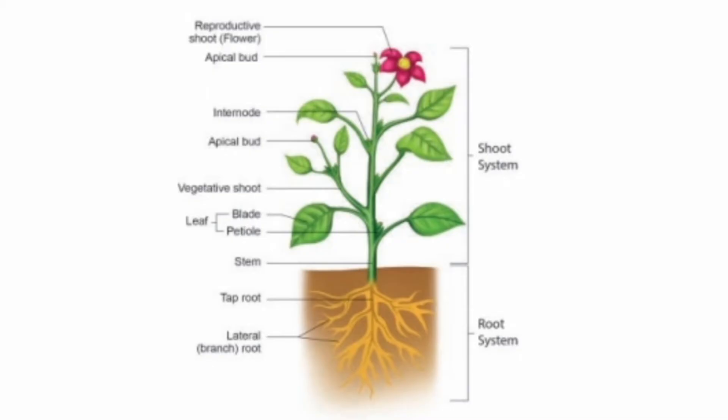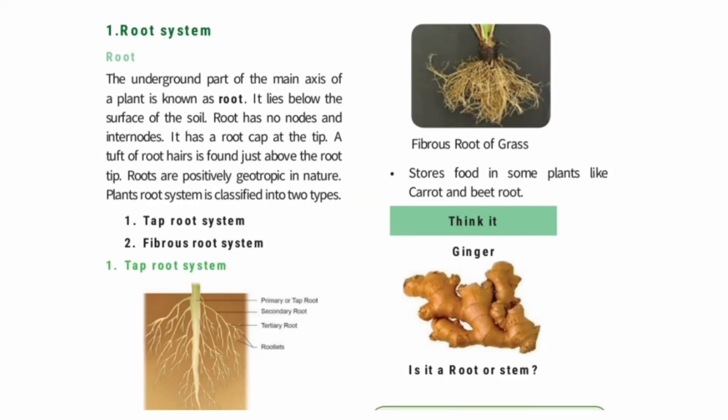Leaves are joined to the stem at points called nodes. Roots are found below the soil. Nodes are the points where leaves are attached on the stem.